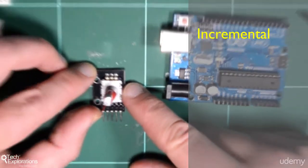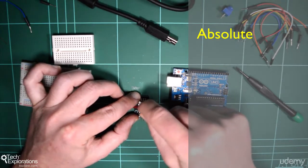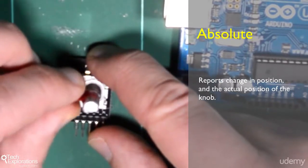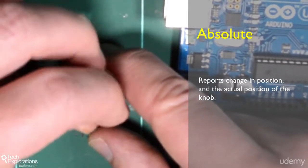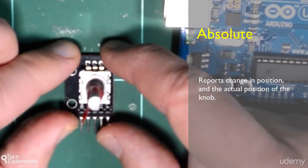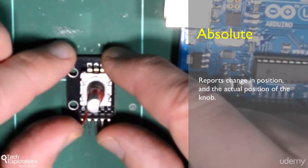On the other hand, an absolute encoder is not going to report just the number of clicks or positions that I've turned it, but also its exact position. So if I turn the knob all the way, say this way, then the device is going to return a reading of, let's say, 90 degrees or whatever that might be.